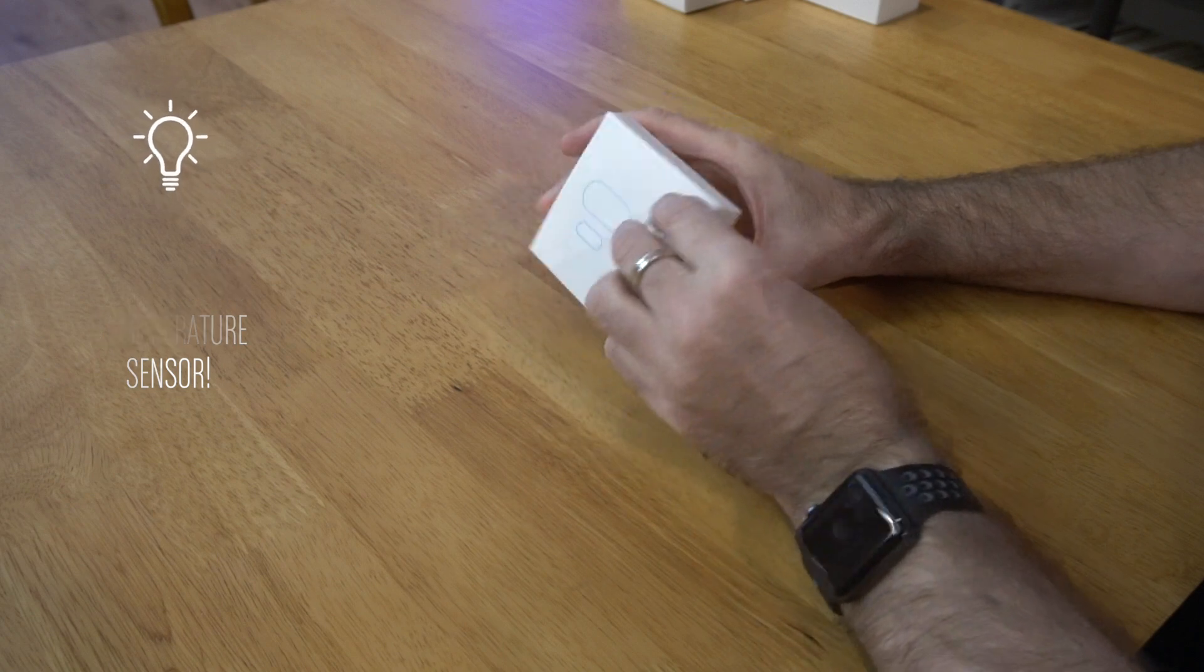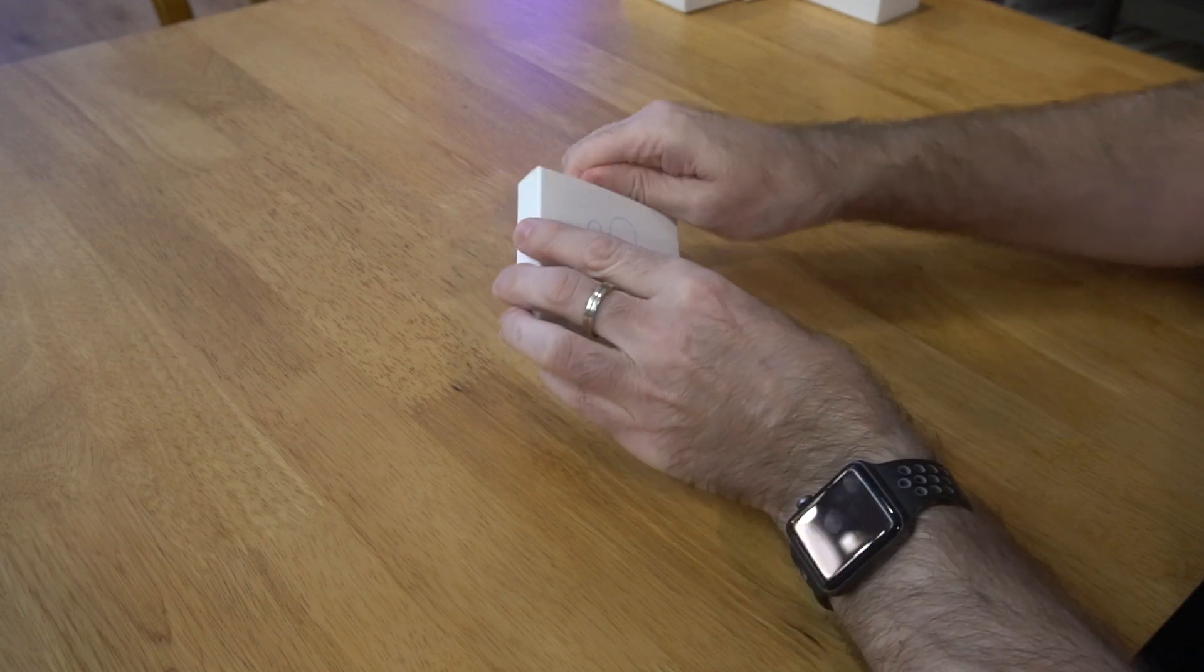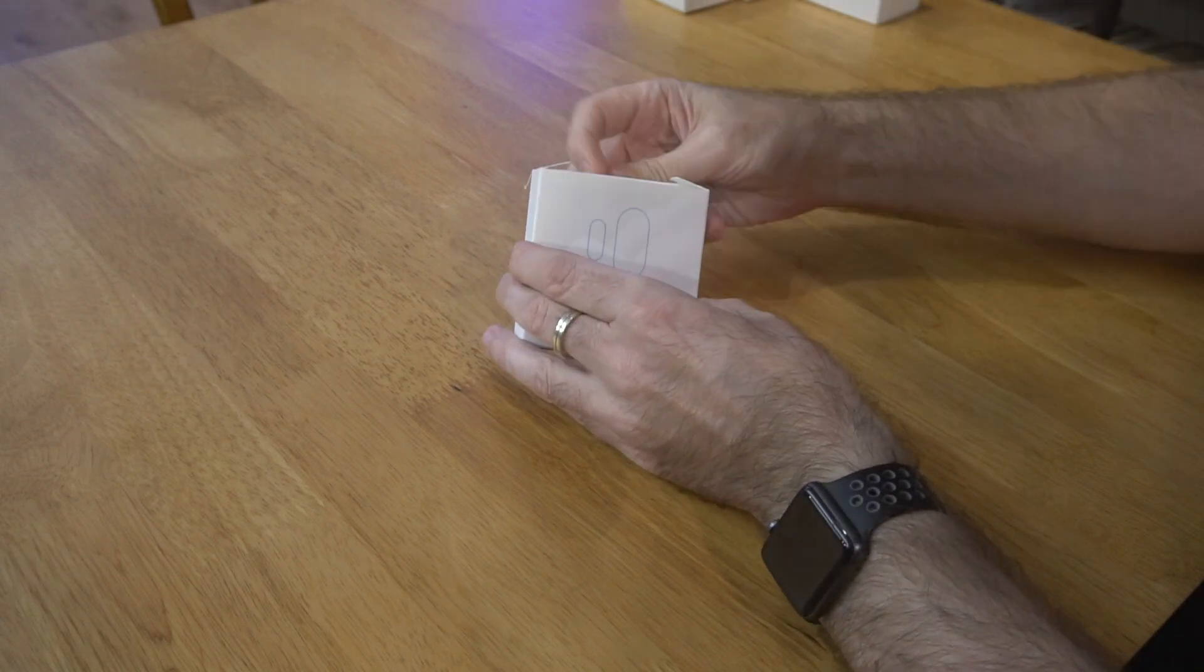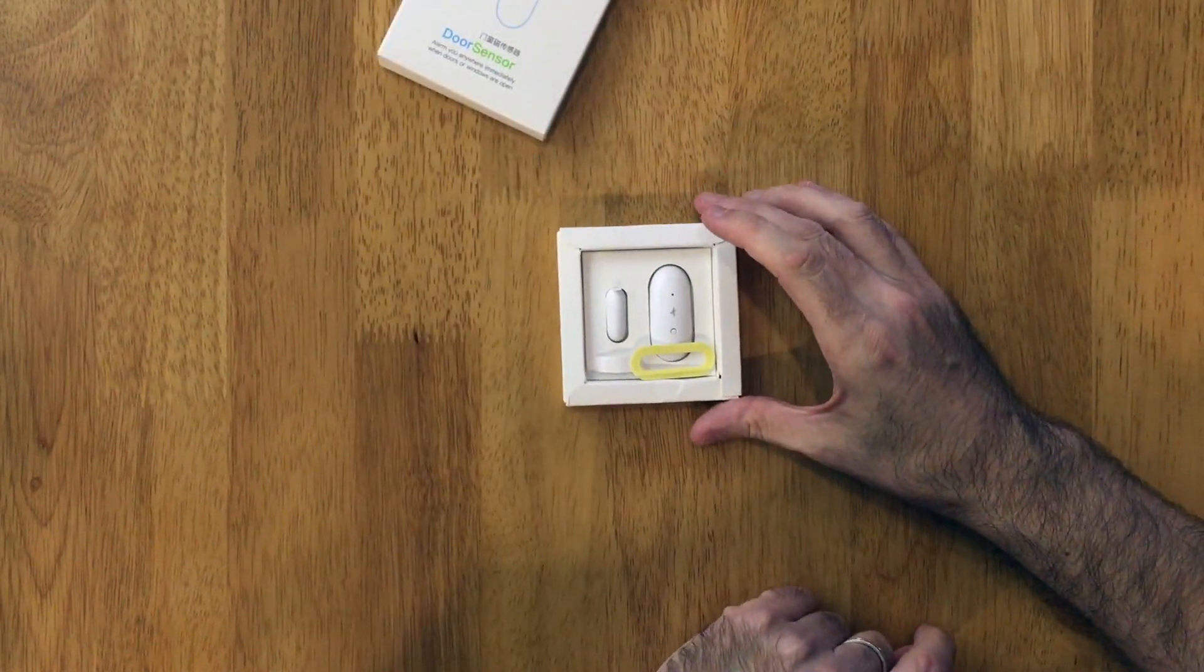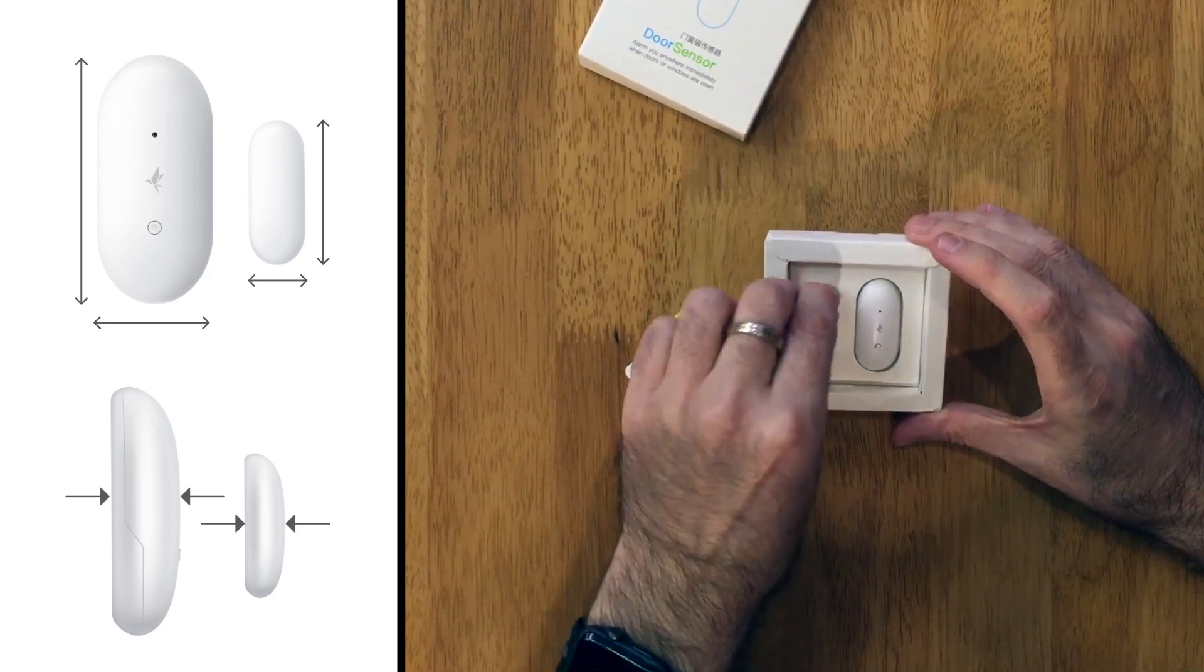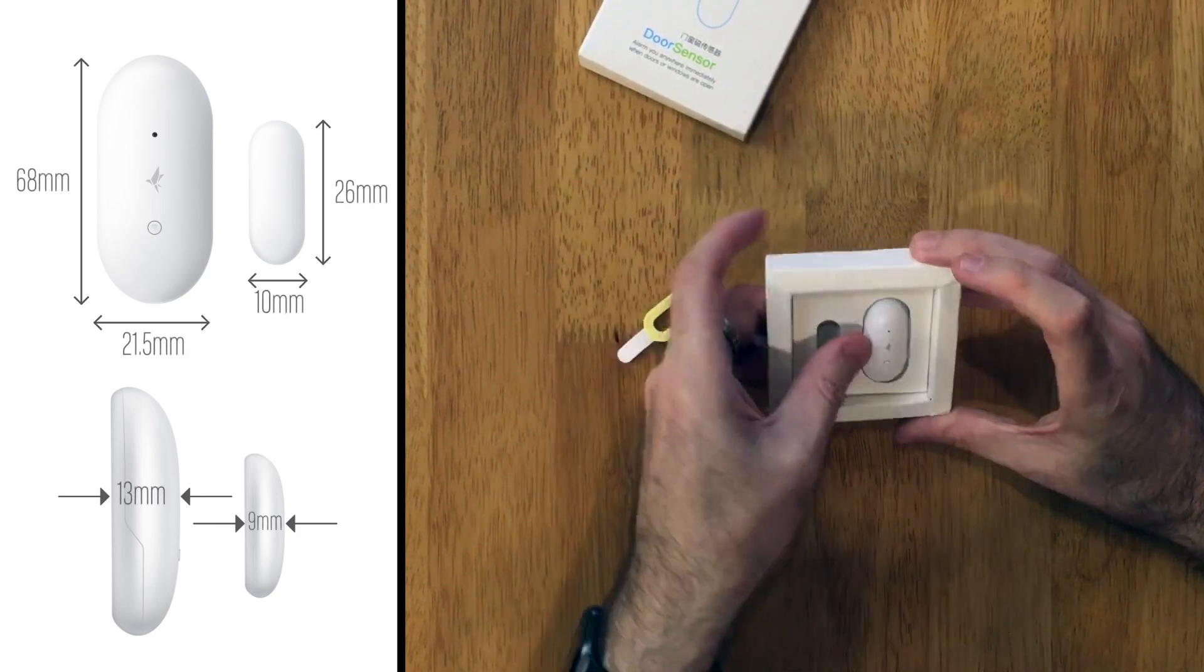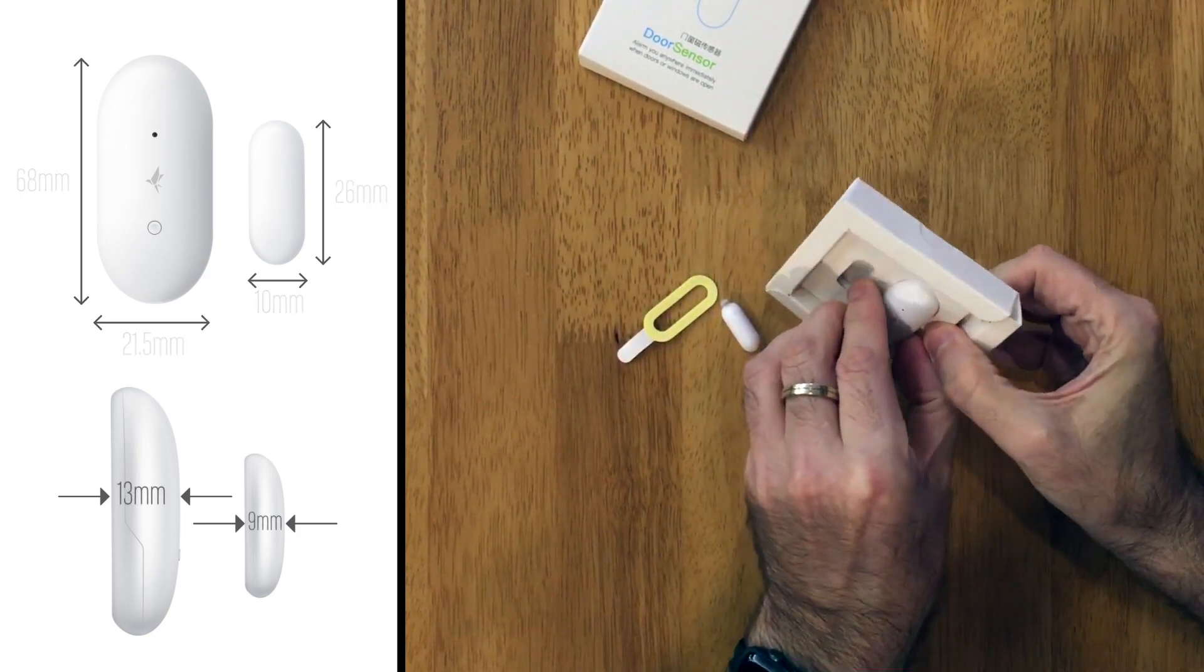The packaging itself is pretty standard, but if I open the box you can see that it's really nicely held in place. Apart from the two parts of the sensor, you also get some extra stickers if you want to relocate the device after you've already stuck it in place.